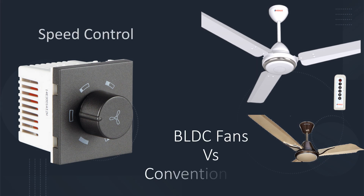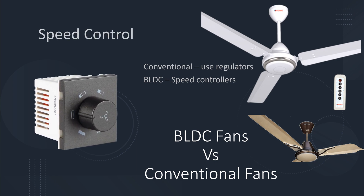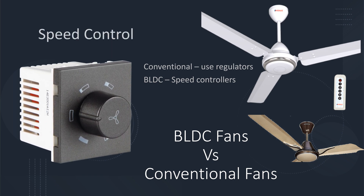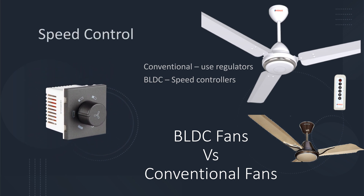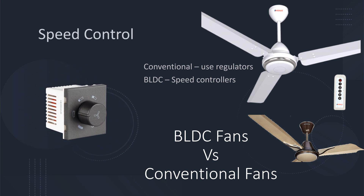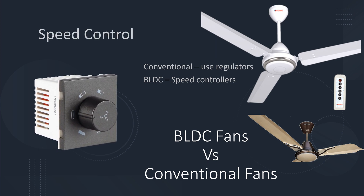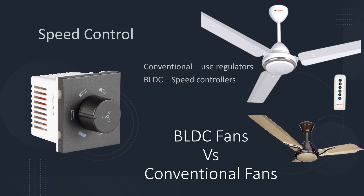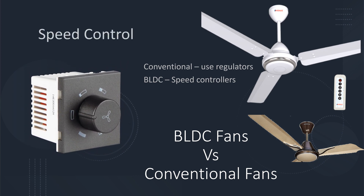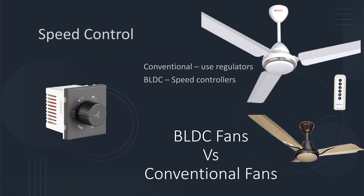Speed control. Conventional fans that use induction motors use regulators to control speed. These regulators use the property of capacitive reactance or resistance to limit the amount of current flowing into the induction motors, thus reducing or increasing speed. However, BLDC motors and BLDC fans use speed controllers that digitally vary the current going to the motor and controlling speed. Most BLDC fans use remote controls to control speed and they cannot be controlled by regulators.